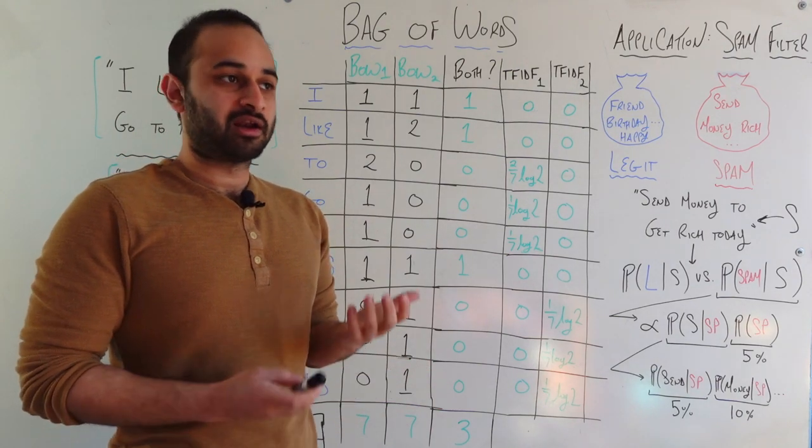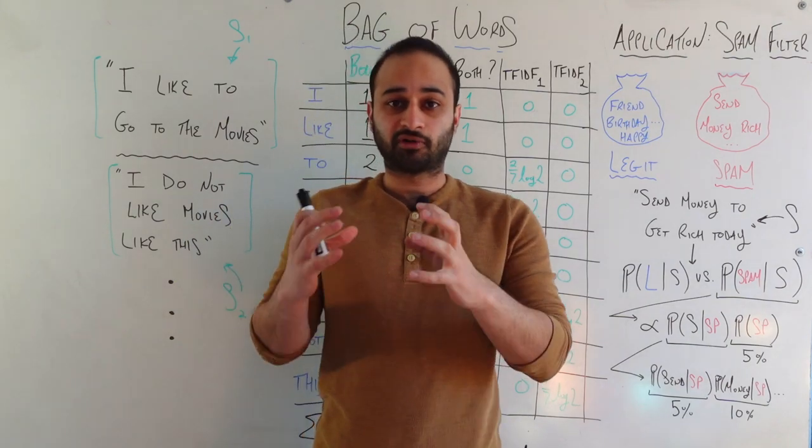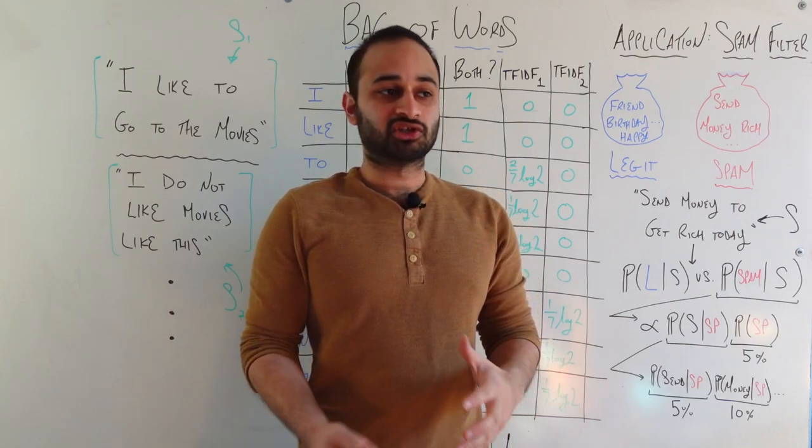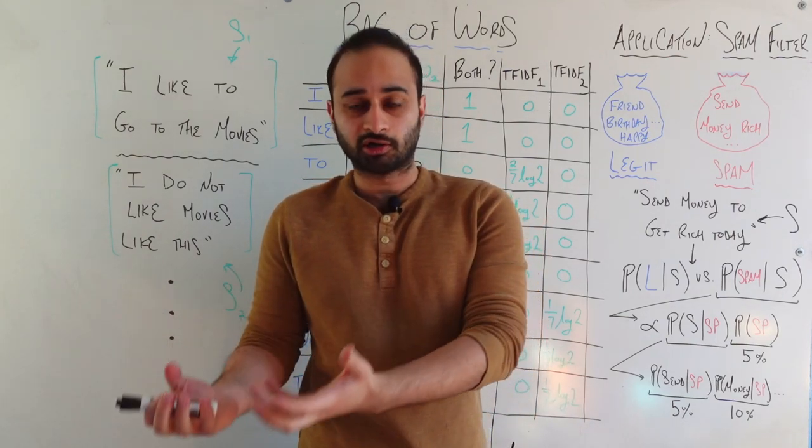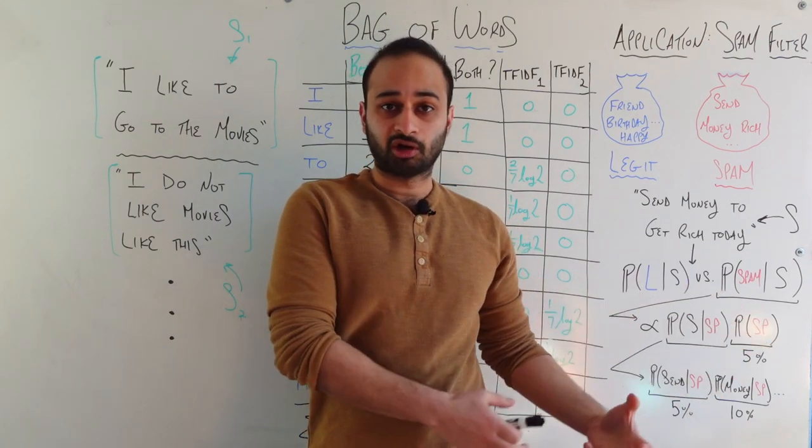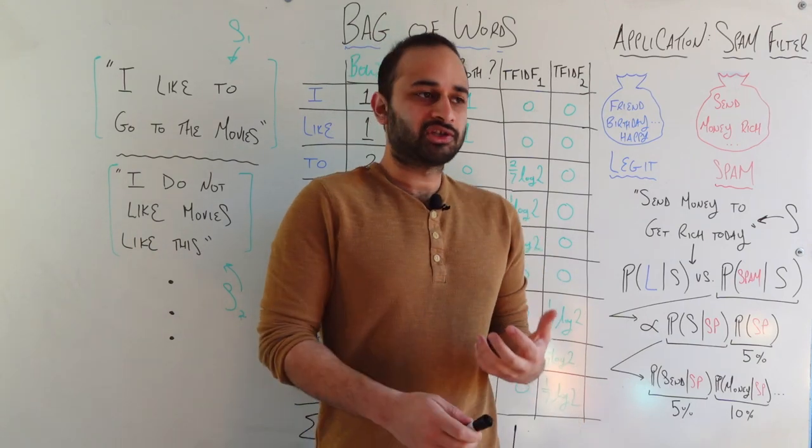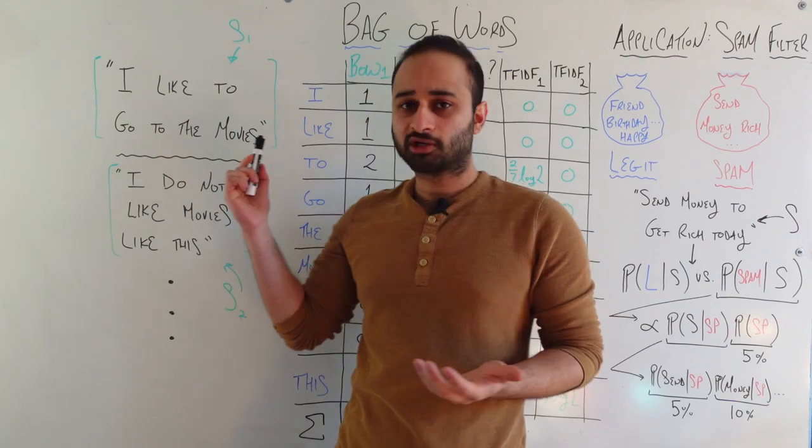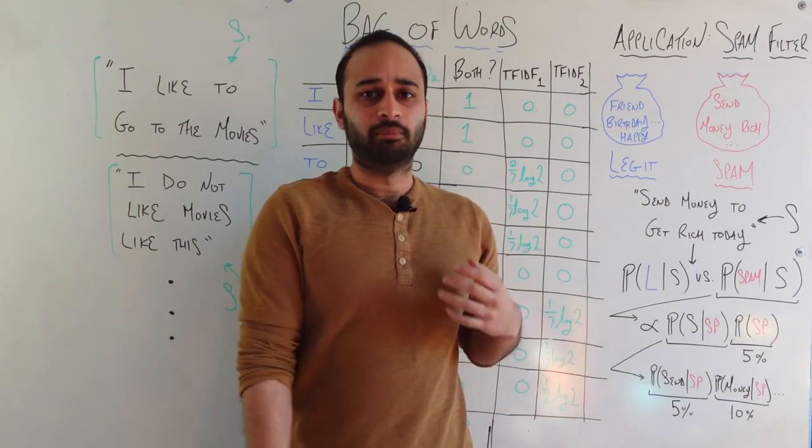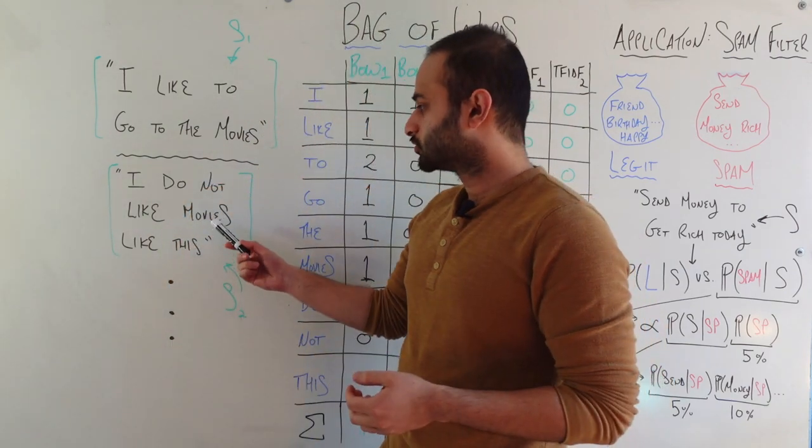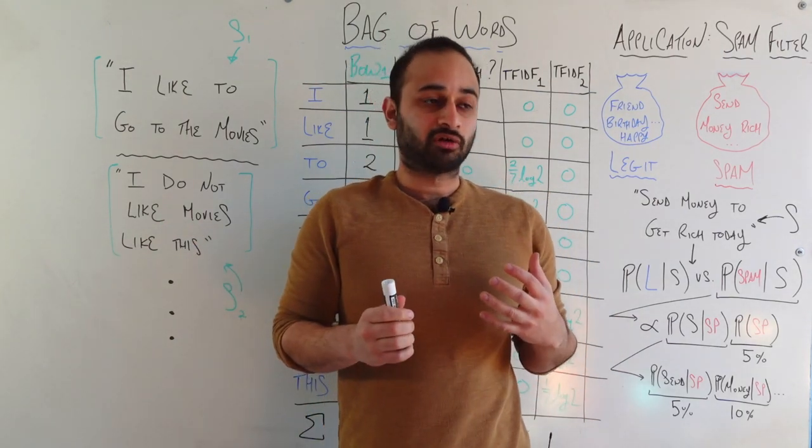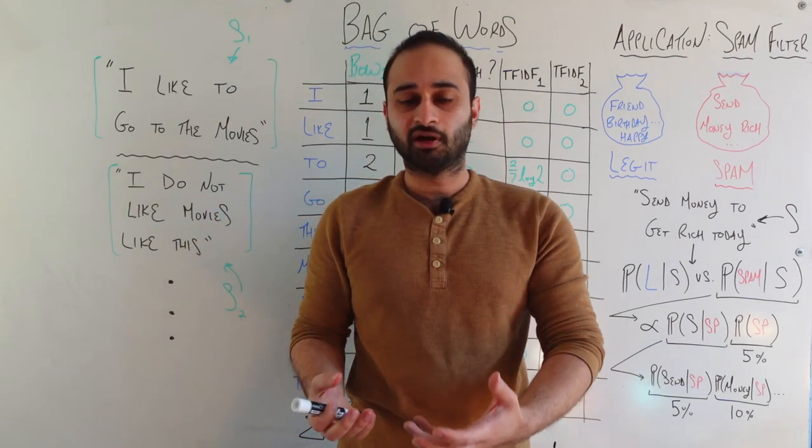That's the basic premise of bag of words is that we are going to take some kind of sentence or paragraph or speech and we are going to make the extremely simplifying assumption that it is just an unordered collection of words. And so that's very much a simplification. Let's say that right off the bat. This is very much a beginner model on which we build other models because as you can see already, it ignores things like order of the words. It just treats it as unordered collection of words. It also ignores things like meaning of the words. And so for example, in the second sentence, you see the word like twice, but it's used in two very different ways.